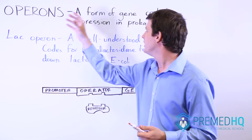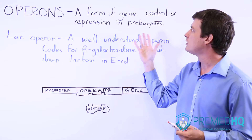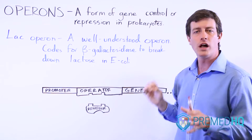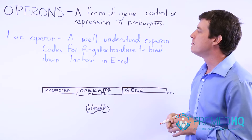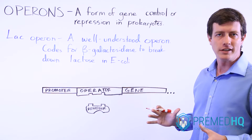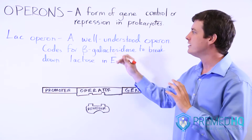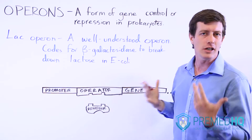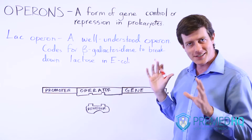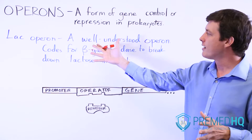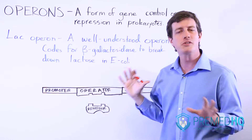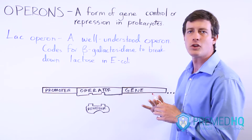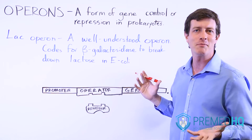An operon is a type of gene control or gene repression seen in prokaryotic cells, and it is very well understood. The most likely operon you will encounter, and also one that serves as a framework allowing you to understand all other operons, is the LAC operon. It's your prototypical operon, and understanding it can help you understand other operons you may encounter on your MCAT exam.